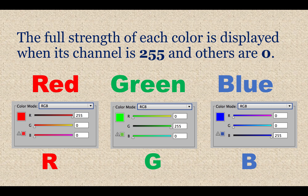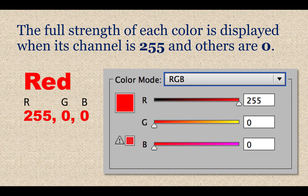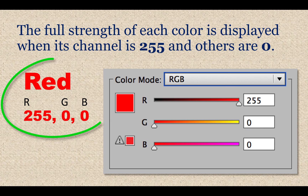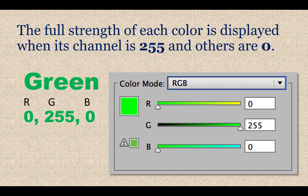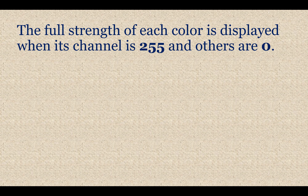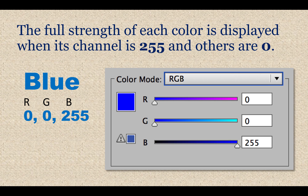Here's an example of the channels. When each channel is up for that particular color and the others are down, it shows you the true color. Here's red, green, and blue each at 255. The red channel is 255 with green and blue at zero — we refer to that as RGB 255, 0, 0. For green it would be 0, 255, 0. And for the blue channel — the last in the RGB sequence — at 255, it would be 0, 0, 255.